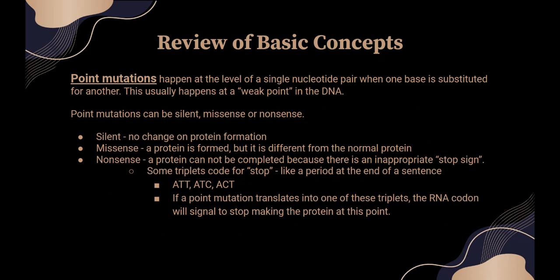In a point mutation, one base in that triplet is substituted. It's kind of like Morse code — you have dots and dashes that combine in sequences of three to represent letters of the alphabet. If you substitute a dot for a dash, you're going to get a different letter, and the word doesn't make as much sense. Point mutations can be silent, which means there's no change in protein formation, because many amino acids can be formed from different triplet pairs. For example, alanine can be formed from CGA, CGG, CGT, or CGC — so as long as you start with CG, you could substitute basically anything and still make alanine.